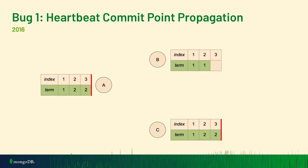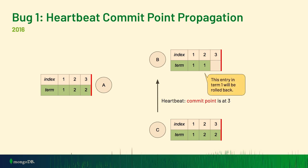Here's a quick example of how this bug would manifest. We have two nodes, A and C, with the same log, and their commit points have advanced to the highest entry. But node B is on a divergent branch of history — in slot two it has an entry in an older term, so it will eventually have to roll back that log entry. By the rules of heartbeat commit point propagation, C could propagate its commit point information to node B, leading to B incorrectly committing log entries that would actually be eventually rolled back.